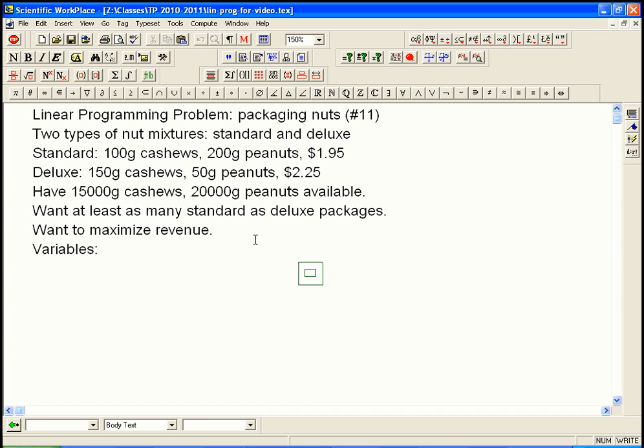Really easy mistake to make right at the start, it's going to screw you up completely, is thinking the variables are cashews and peanuts. Those aren't variables. We know how many cashews we have. We know how many peanuts we have. What we can choose is how many standard packages and how many deluxe packages to make. And so the variables are going to be x equals number of standard packages, y equals number of deluxe packages.